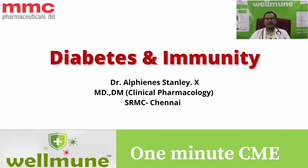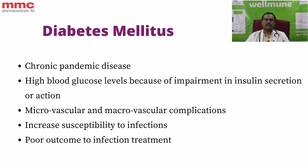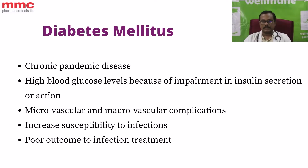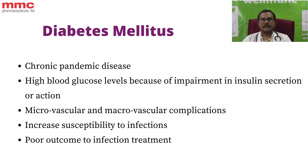Hi everyone, welcome to the One Minute CMA series. We are going to see about diabetes and immunity. We all know that diabetes mellitus is a chronic disease — it can even be considered a chronic pandemic of the human population. It is characterized by increased blood sugar levels and also insulin resistance or impairment in insulin secretion.